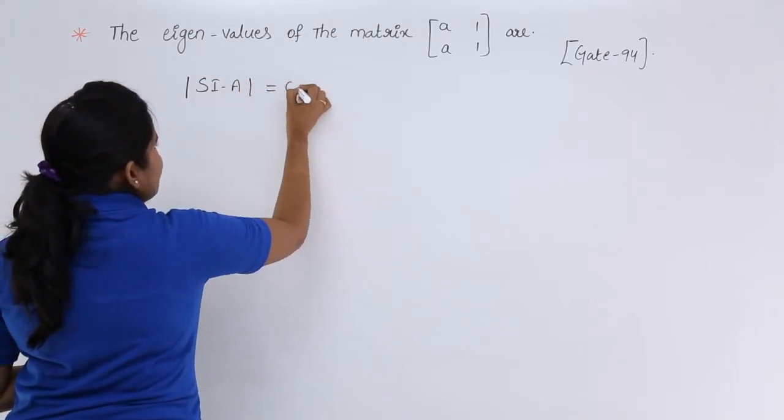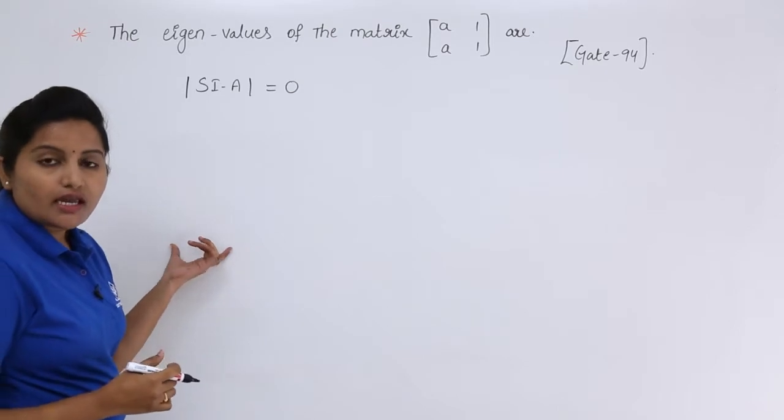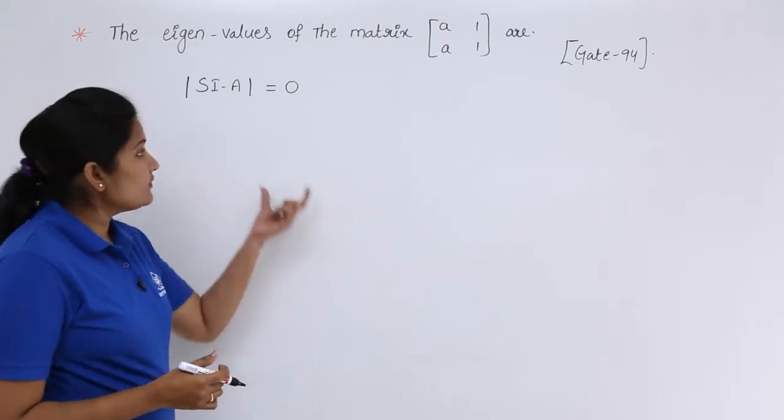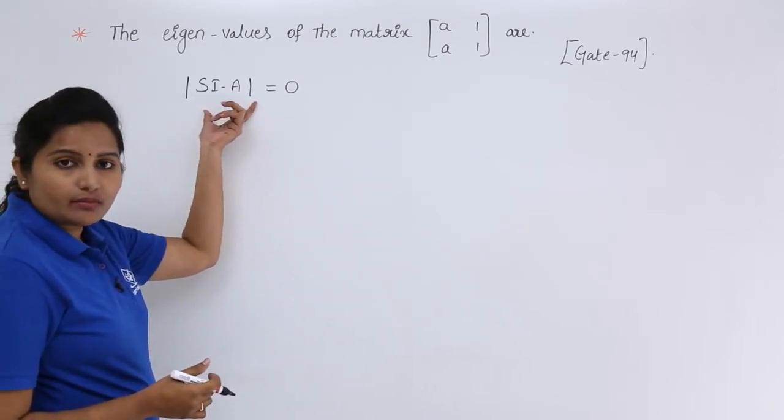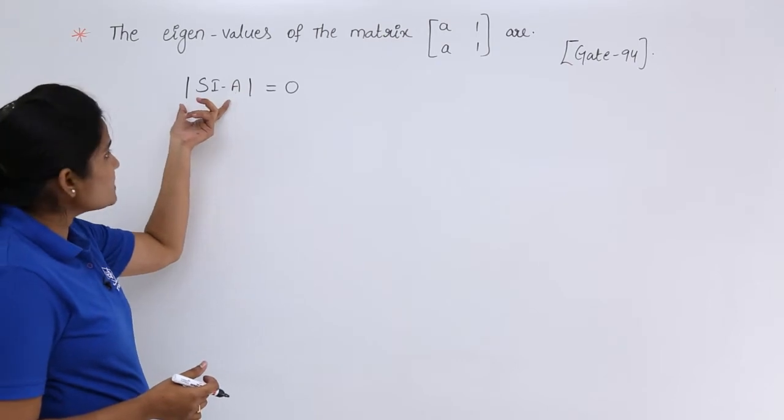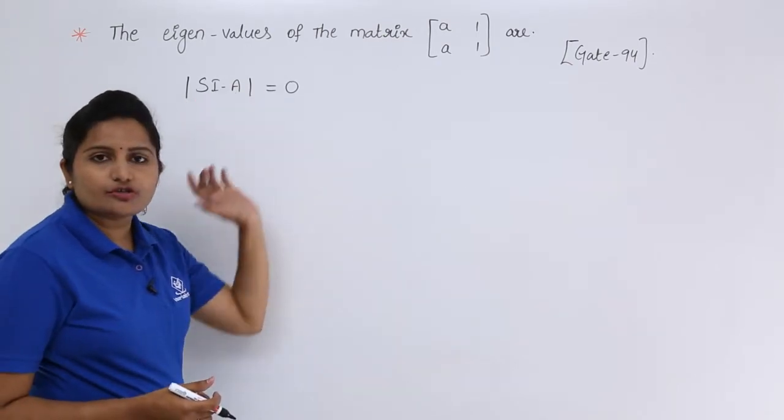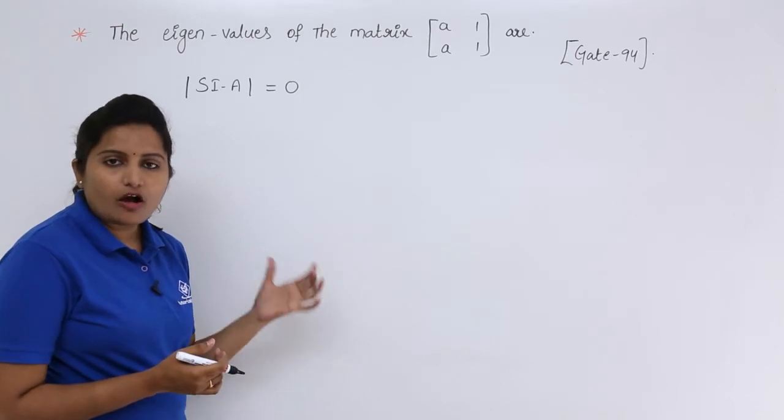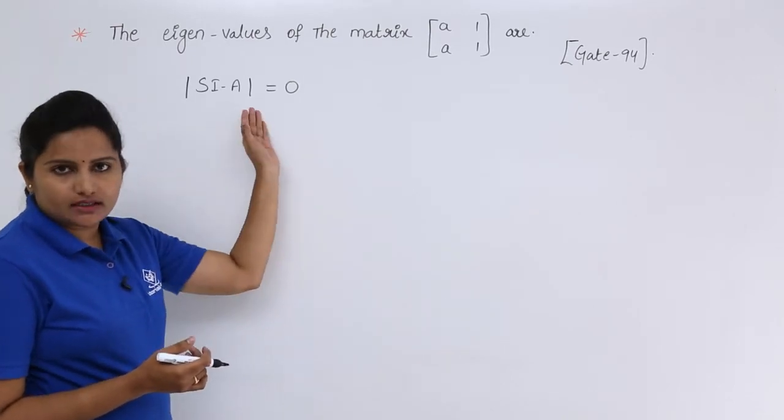In state space analysis, the characteristic equation can be found by using modulus of Si minus A is equivalent to 0. We can find our characteristic equation like this.